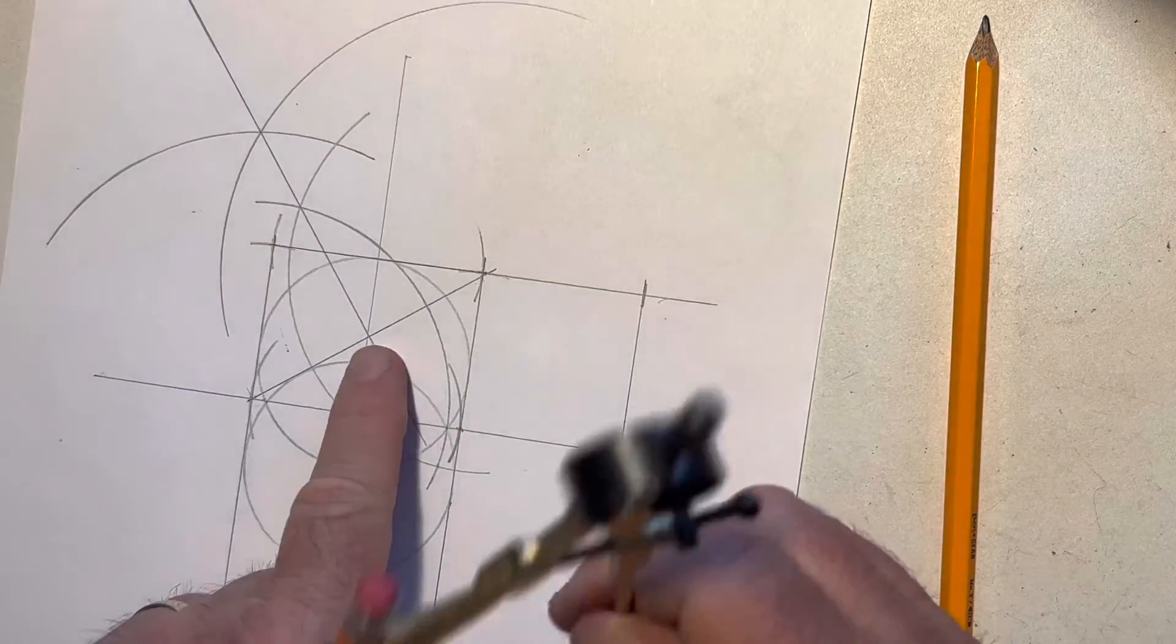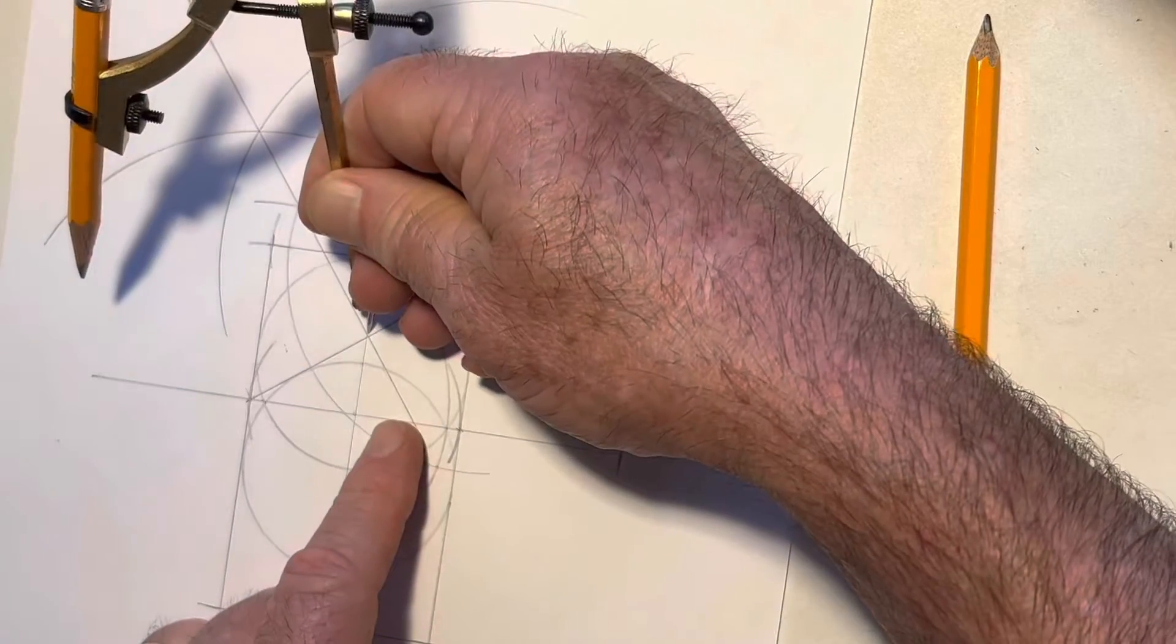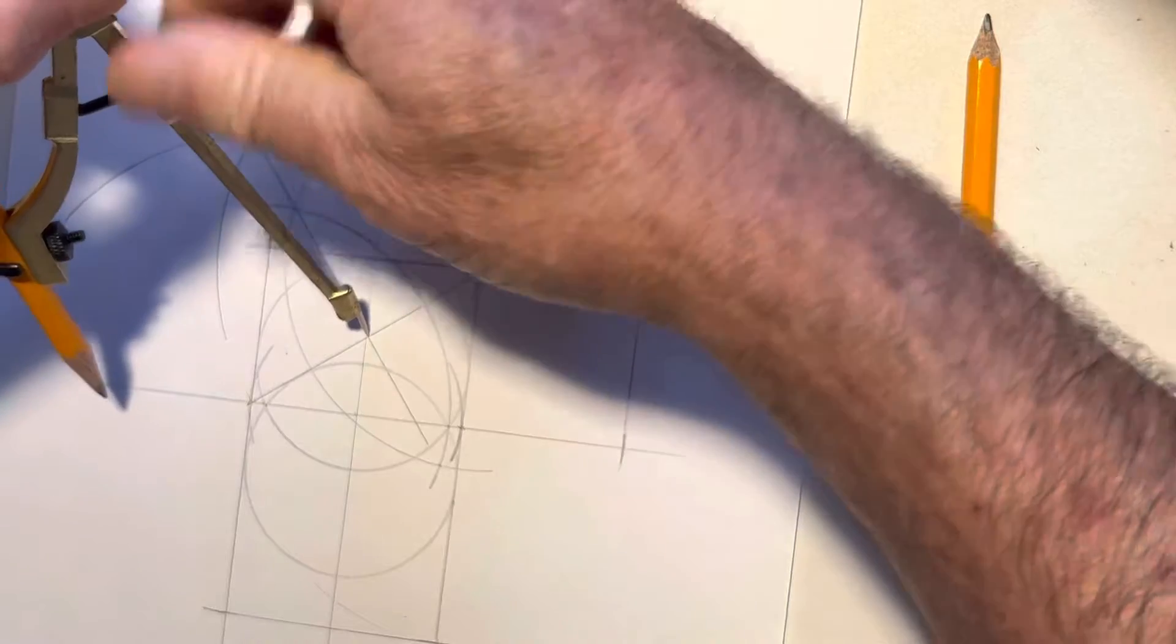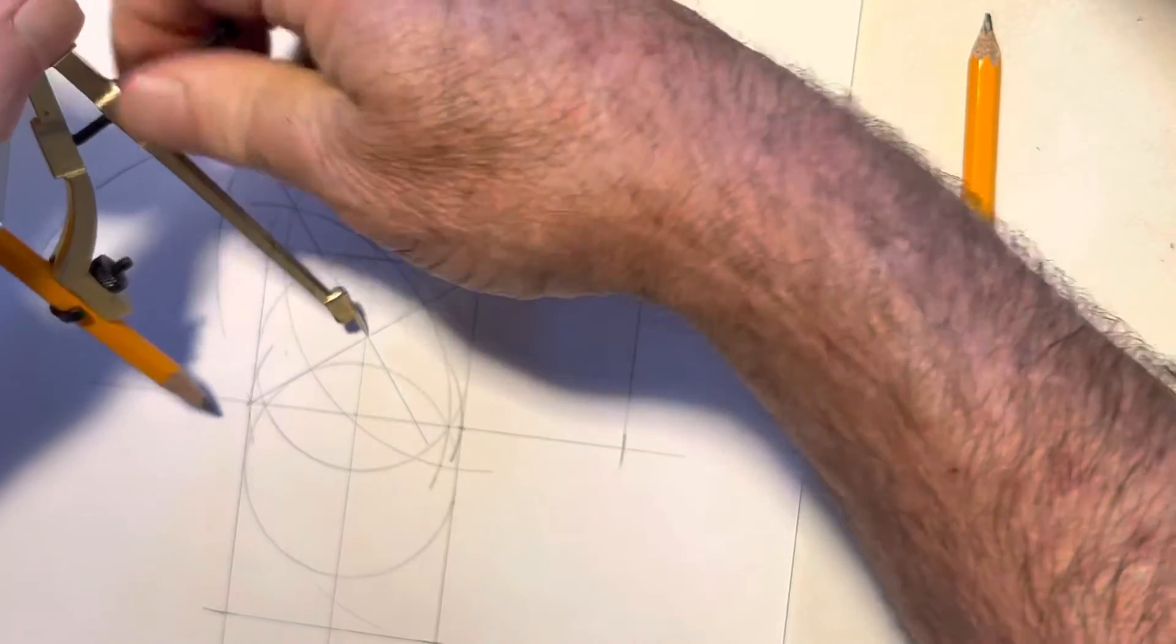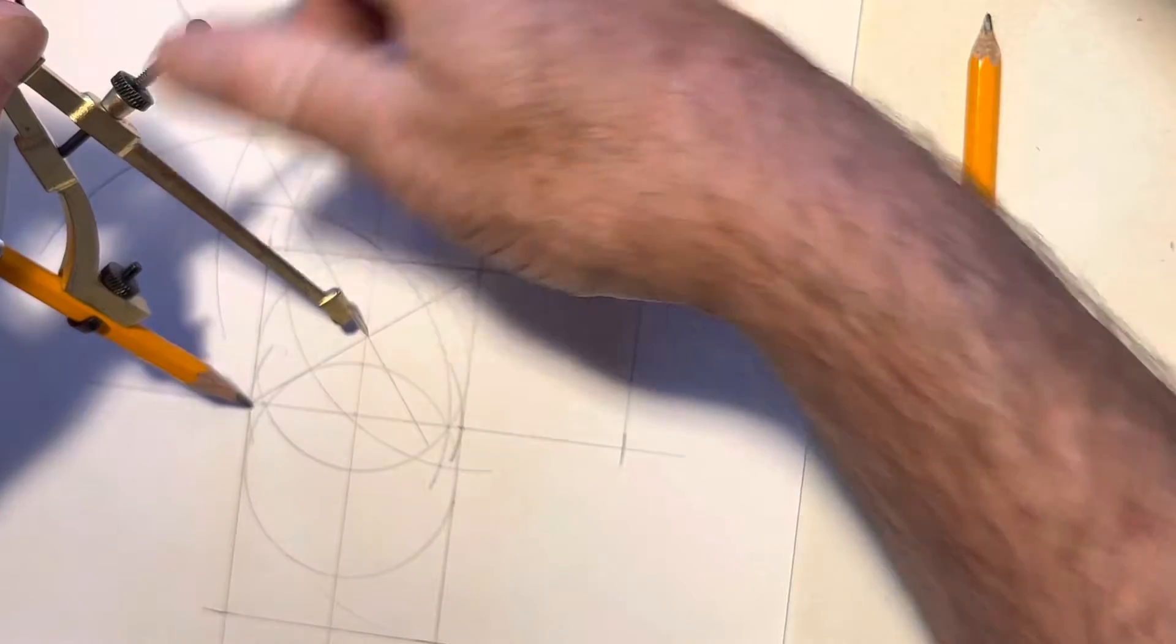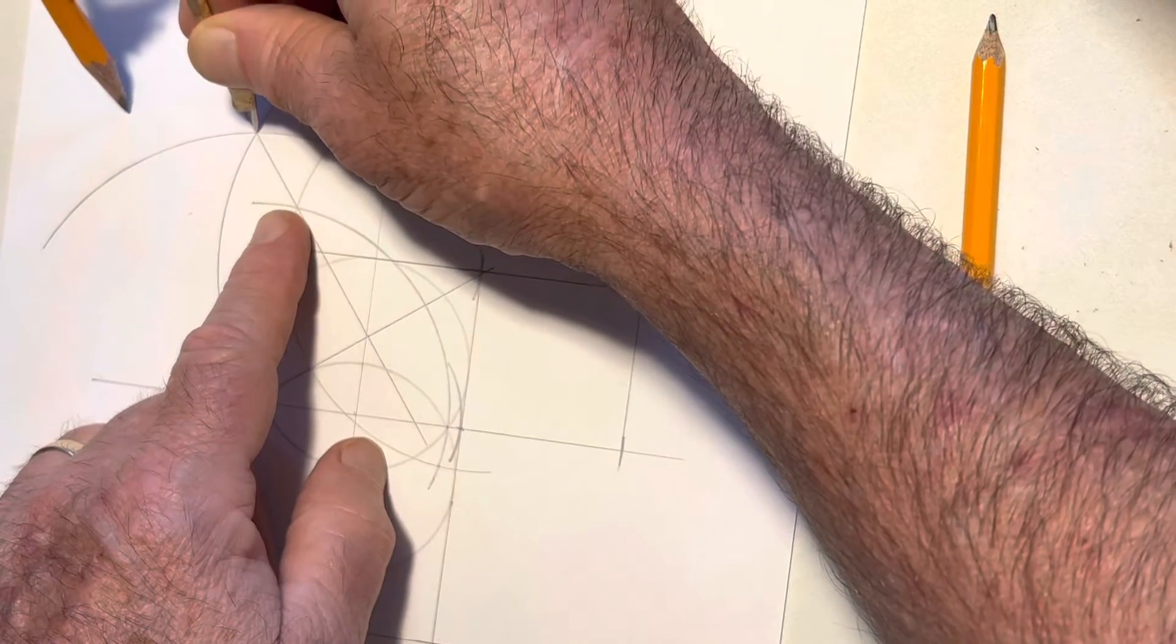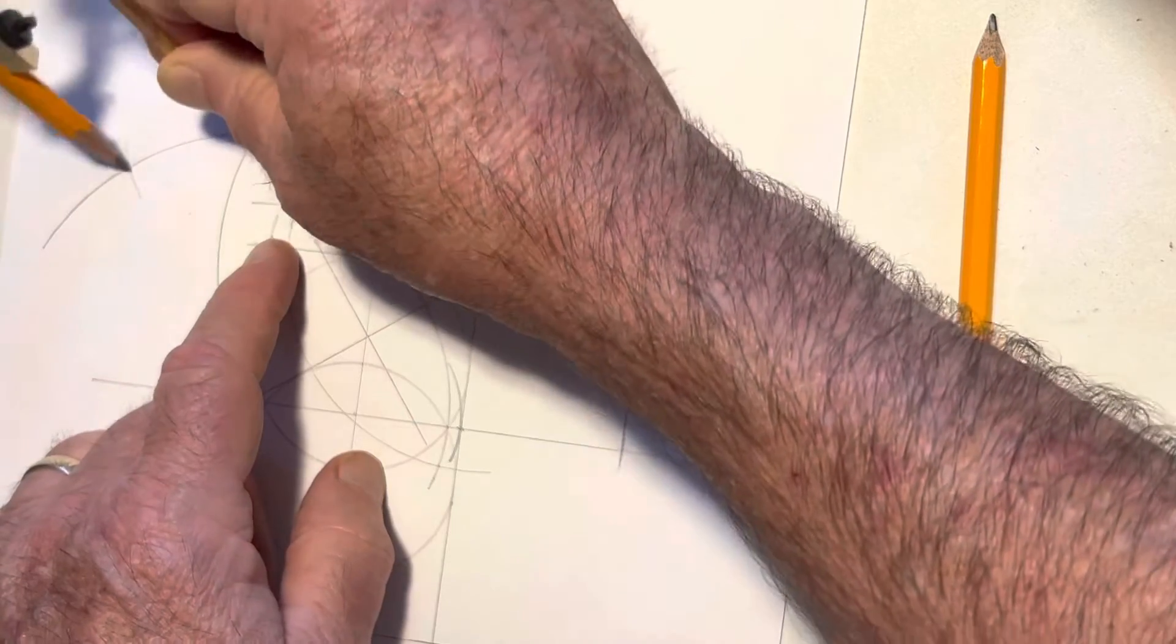Now I'm going to take half of this measurement of the hypotenuse here. Starting with - remember this line divided that in half - I'm going to take my compass and get this new measurement. I'll take it up here to the point where the arc and the compass crossed.